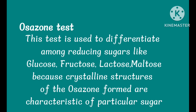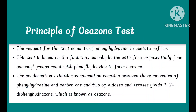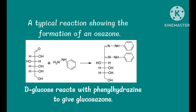Osazone test: This test is used to differentiate among reducing sugars like glucose, fructose, lactose, and maltose, because the crystalline structures of the osazone formed are characteristic of each particular sugar. The reagent consists of phenylhydrazine in acetate buffer. The test is based on the principle that carbohydrates with free carbonyl groups react with phenylhydrazine to form osazone. The condensation-oxidation reaction between three molecules of phenylhydrazine and carbons 1 and 2 of aldoses or ketoses yields 1,2-diphenylhydrazone, known as osazone. D-glucose reacts with phenylhydrazine to give glucosazone.